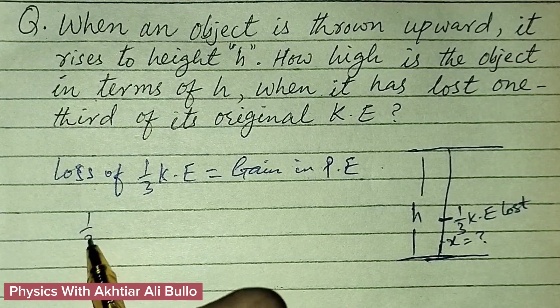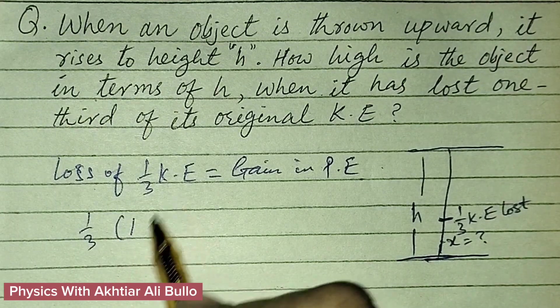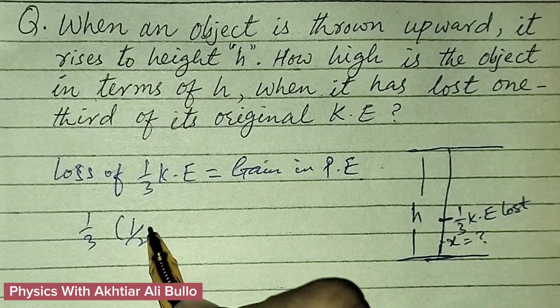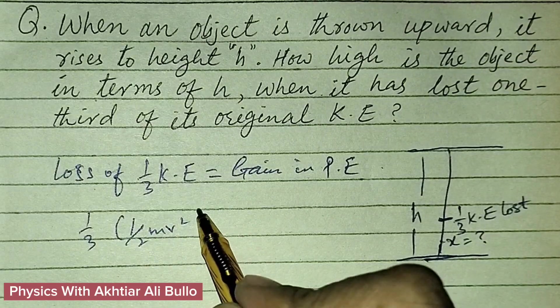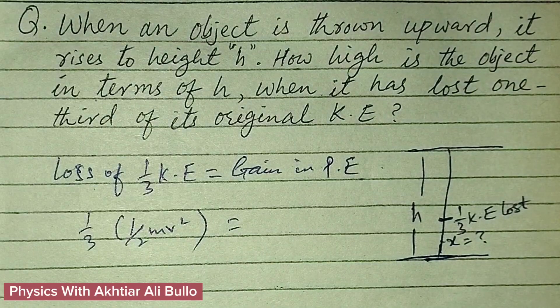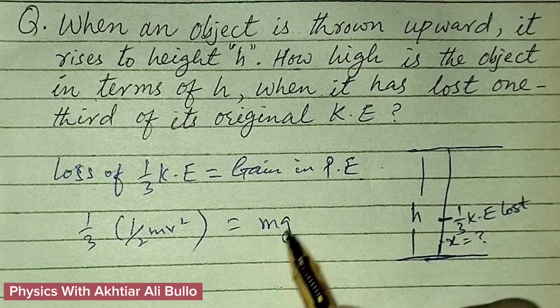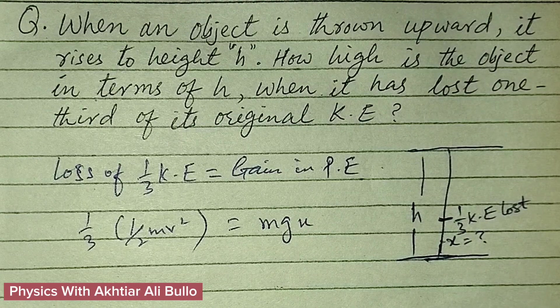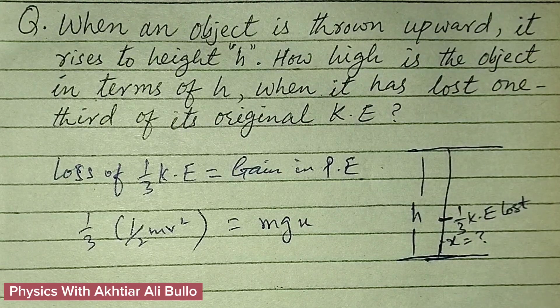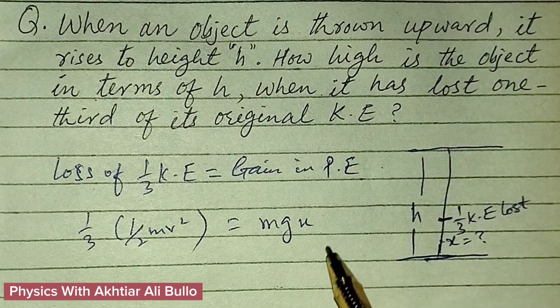So loss of one-third of kinetic energy: kinetic energy is equal to 1/2 mv² and potential energy at point x is mgx.